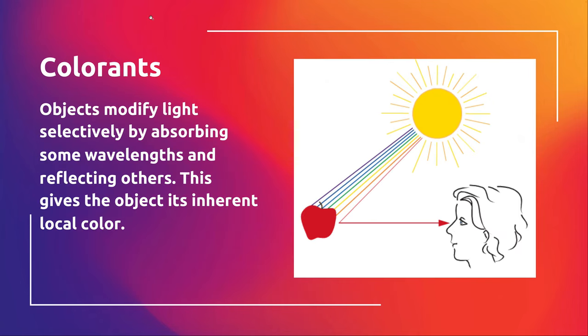There are different colorants that align with those different wavelengths. Objects will modify light by either absorbing or reflecting those wavelengths.